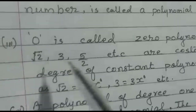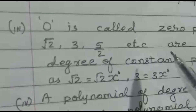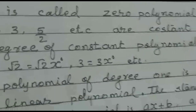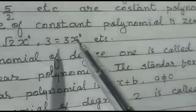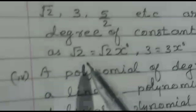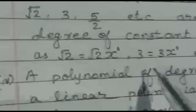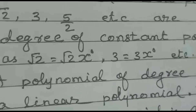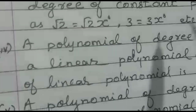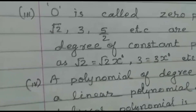Constants such as √2, √3, 5/2, etc. are called constant polynomials. The degree of a constant polynomial is 0, because, for example, √2 can be written as √2·x⁰ and 3 can be written as 3·x⁰. Therefore the degree of a constant polynomial is 0.